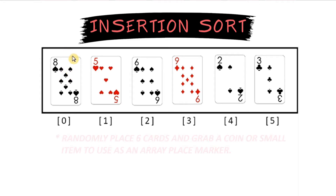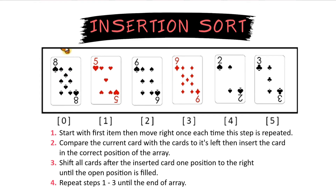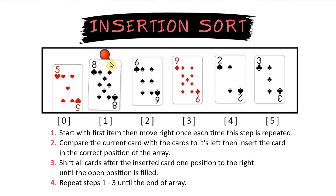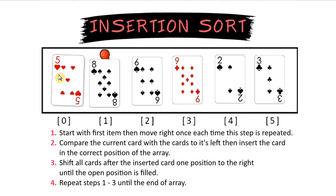To start, we normally look at the first item in the array, but since 8 by itself is already sorted because it's the only number, let's shift one over and go to the 5 and ask ourselves: where does 5 go in comparison to the 8? Since it's smaller than the 8, let's move it in front of the 8 and shift the 8 over one spot to the right.